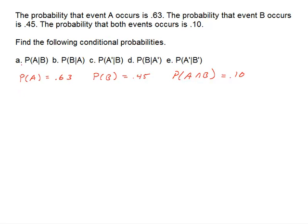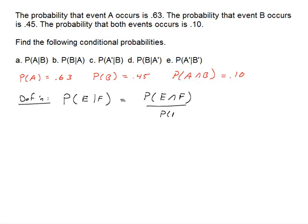When we look at the first one, all we need is the definition of conditional probability. The probability of event E, given that event F has occurred, is the probability that E and F occur together over the probability of the given, so the probability of F.